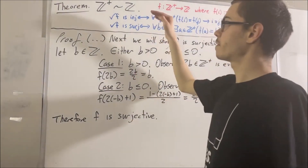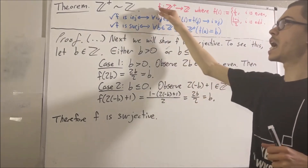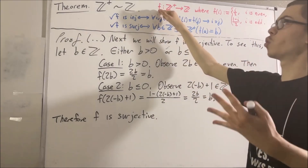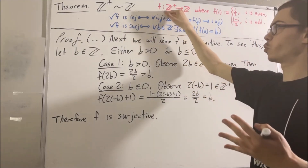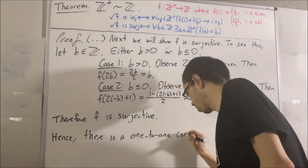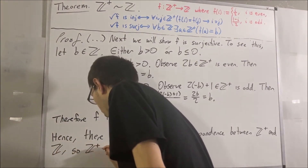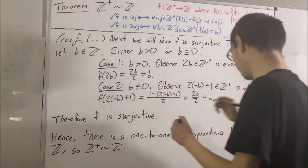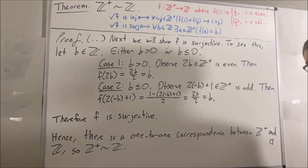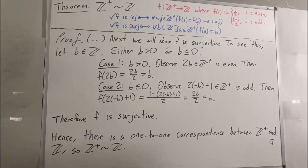We've proven that f is both injective and surjective, which means f gives a one-to-one correspondence between the positive integers and the integers. This completes the proof. That's one way to prove this theorem — thanks for watching.